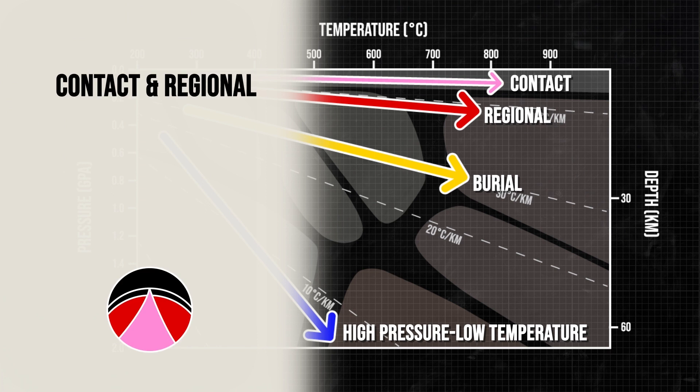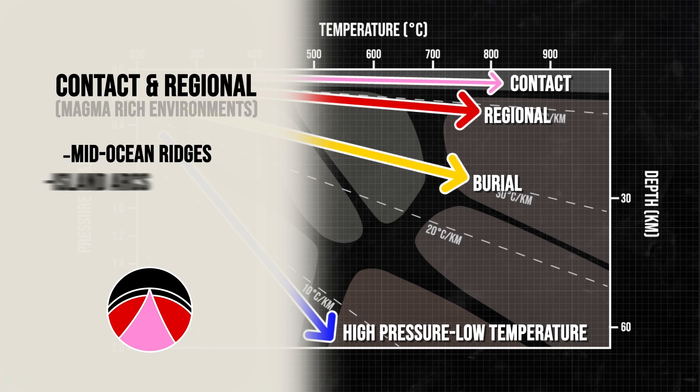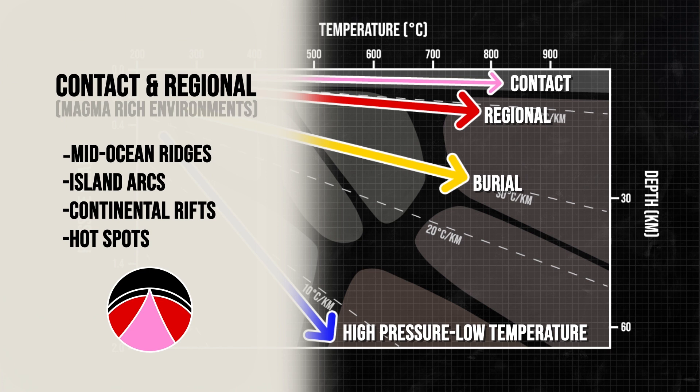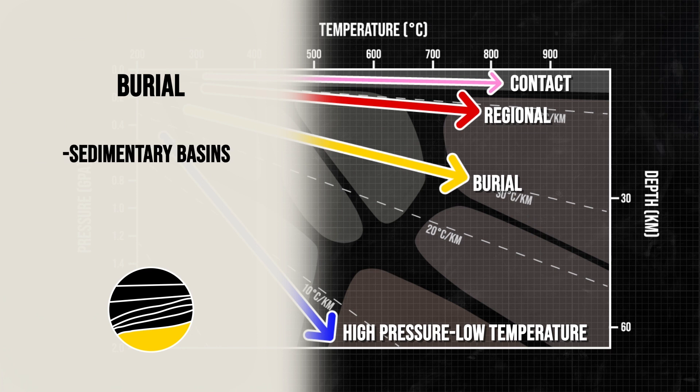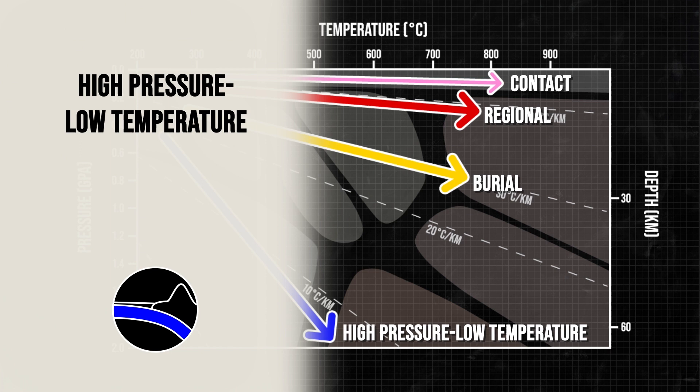Contact and regional metamorphism can be related to magma-rich environments such as mid-ocean ridges, island arcs, continental rifts, and hotspots. While burial metamorphism is associated with sedimentary basins and passive continental margins. And high-pressure low-temperature metamorphism is associated with subduction zones.